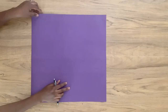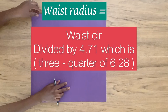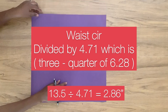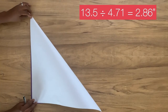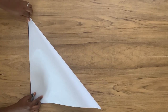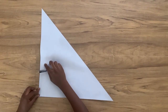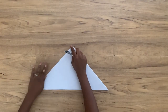Working directly on pattern paper, the waist radius for the three-quarter circle skirt is my waist circumference divided by 4.71, which for me is approximately 2.9. Fold your pattern paper diagonally to get a right-angle shape, then fold again on a 45-degree angle to give you a triangular shape.